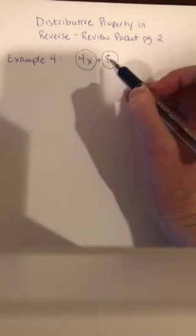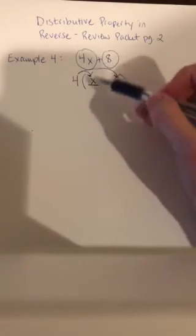Do these two terms have any factors in common? Is there a number that divides into both 4 and 8? Yes — it's 4. 2 works as well, but if you want to completely factor it, it would be 4. So let's take 4 out. 4 times — you're going to have a term here and a term here. 4 times what is 4x? 4 times x is 4x. And 4 times what is 8? 4 times 2 is 8. So you can say 4 times x plus 4 times 2 equals 4x plus 8. That's the distributive property in reverse.